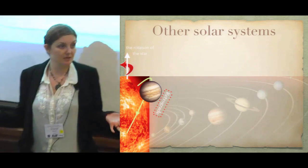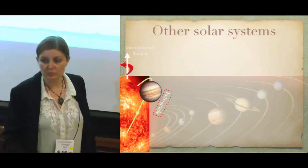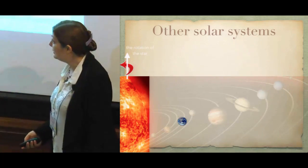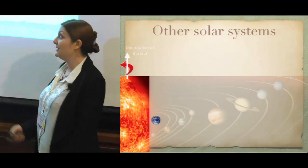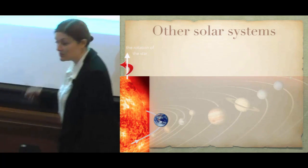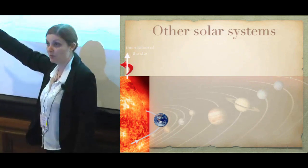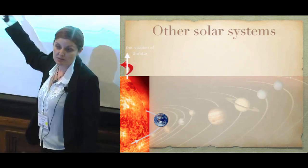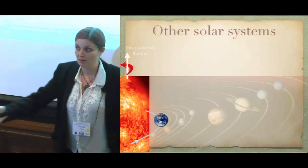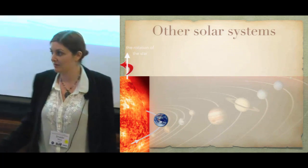We also notice that many planets are misaligned with respect to the stellar spin axis. A system where the planet orbits in the same direction as the star spins is called aligned. But many are misaligned — basically tilted — and some are even retrograde, orbiting in the opposite direction. And this is a puzzle. We also found many, many super-Earths very close in, closer than Mercury's orbit, which is a surprise because inward of Mercury we have nothing in our solar system.